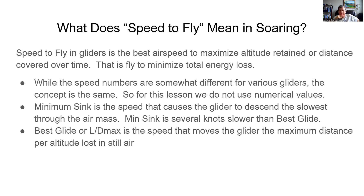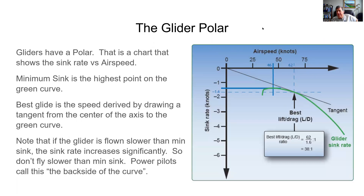Fly the glider as efficiently as you can. While the speed numbers are somewhat different for various gliders, the concept is the same. For this lesson we don't use numerical values. Min sink is the speed that causes the glider to descend the slowest through the air mass, and min sink is usually several knots slower than best glide. Best glide is the speed that moves the glider the maximum distance per altitude lost. Every glider has a glider polar showing the rate of sink versus airspeed — the faster you go, the higher the drag, the more you sink. You can see that minimum sink is the highest point on the glider sink rate graph.